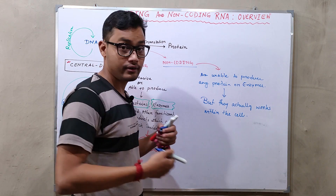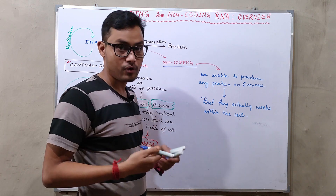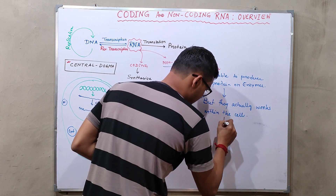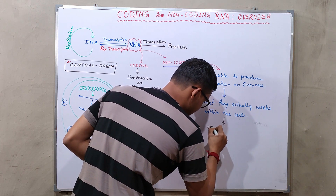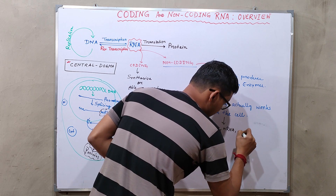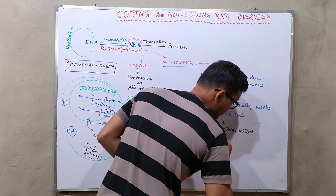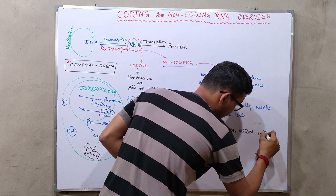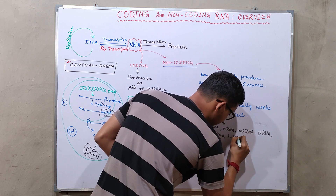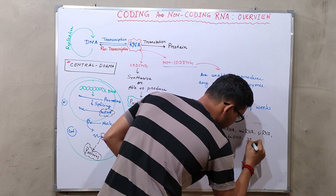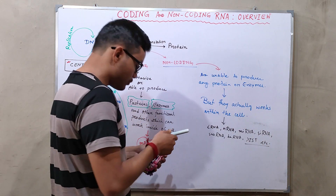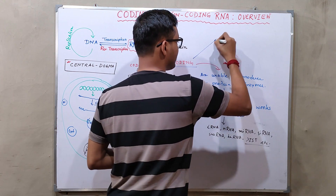Non-coding RNAs are very much essential for any cell to live, reproduce, and perform its functions. Examples of these kinds of RNAs are tRNA (transfer RNA), rRNA (ribosomal RNA), miRNA (microRNA), siRNA, snRNA, Xist, and others. Those particular non-coding RNAs are broadly classified into two different categories.